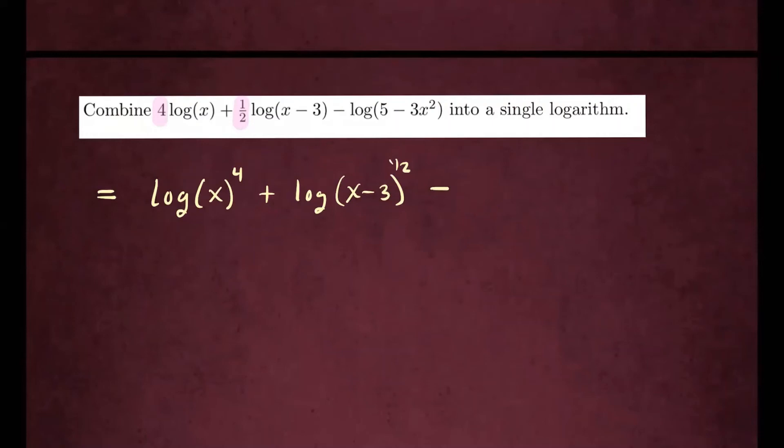And the last one, just rewrite log of five minus three x squared. And now I see there is a sum between two logarithms, so that will turn into a product. This is log of x to the fourth times x minus three to the power of half.